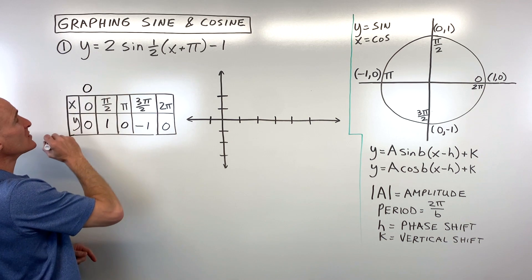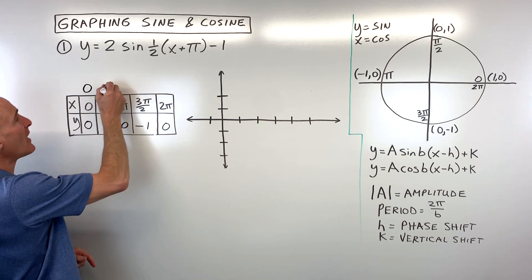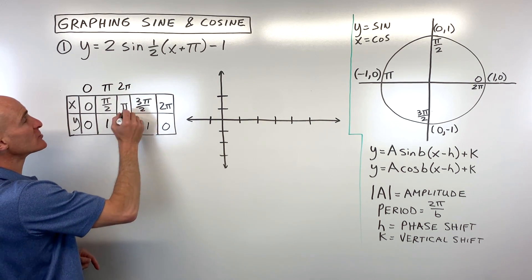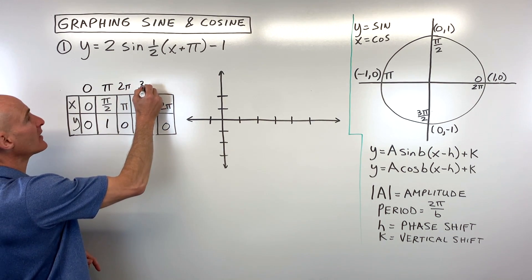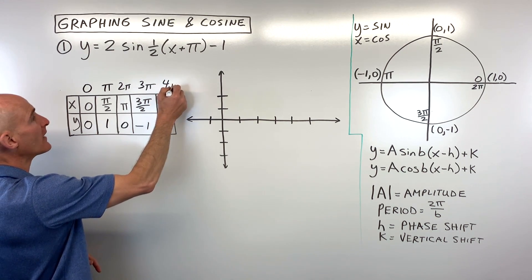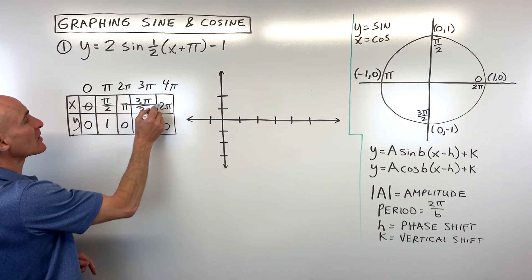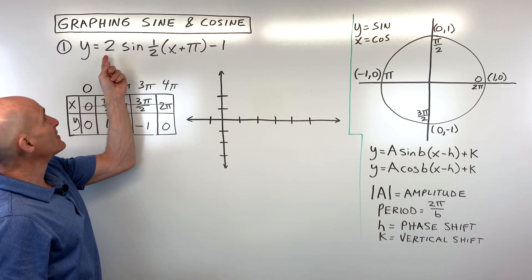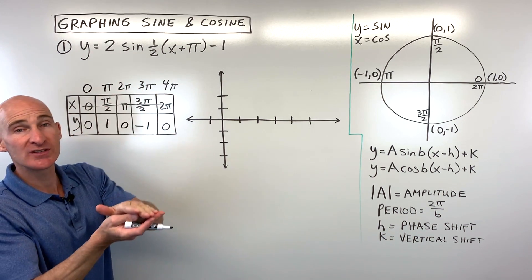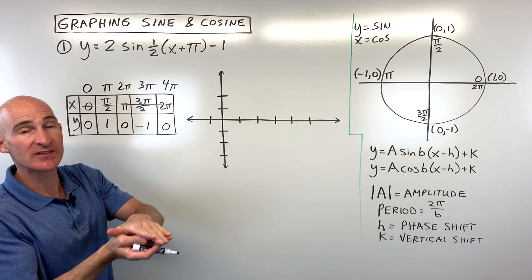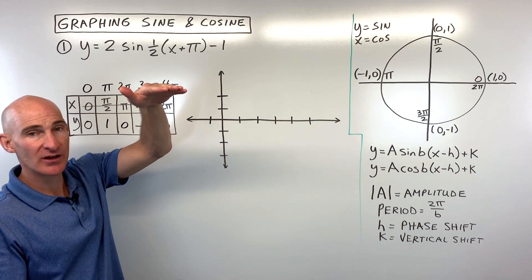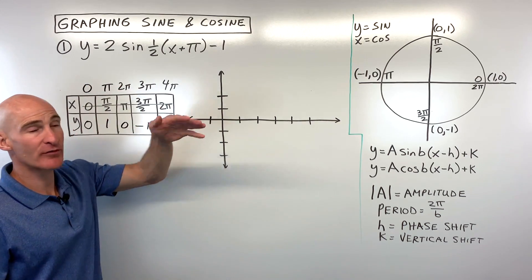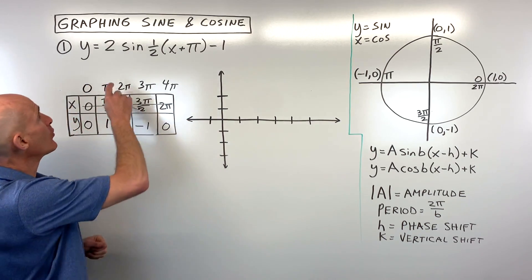Zero times two is zero, π/2 times two is π, π times two is 2π, 3π/2 times two is 3π, and 2π times two is 4π. I'm going to cross out the old x-values — these are our new ones. This coefficient, the two, is our amplitude — our vertical stretch or shrink. If it's bigger than one it's a stretch, if it's between zero and one it's a shrink, and if it's negative it's a reflection over the x-axis.